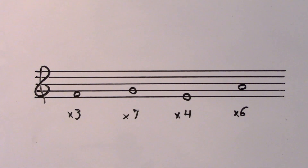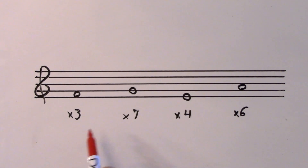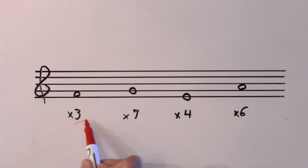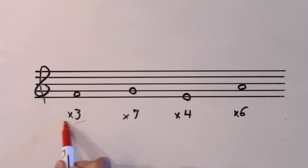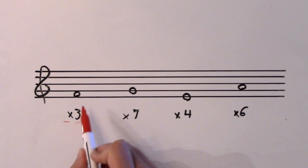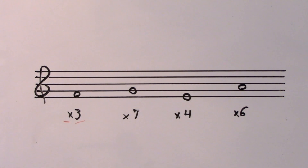We're going to write the notes above. Remember, this is an intervallic label. There are two components: the distance, which is the number, and the quality. So the distance is a third and the quality is augmented.